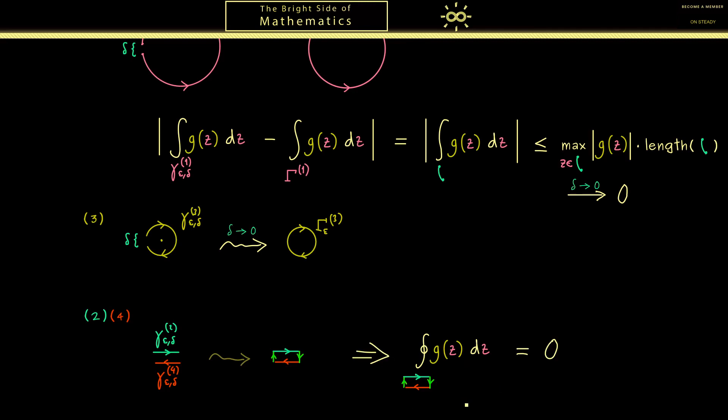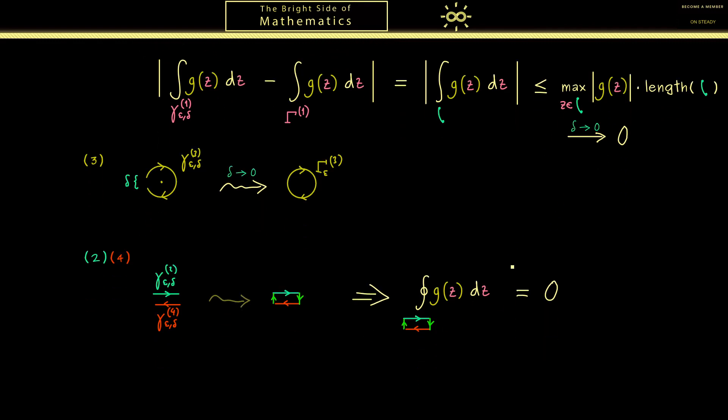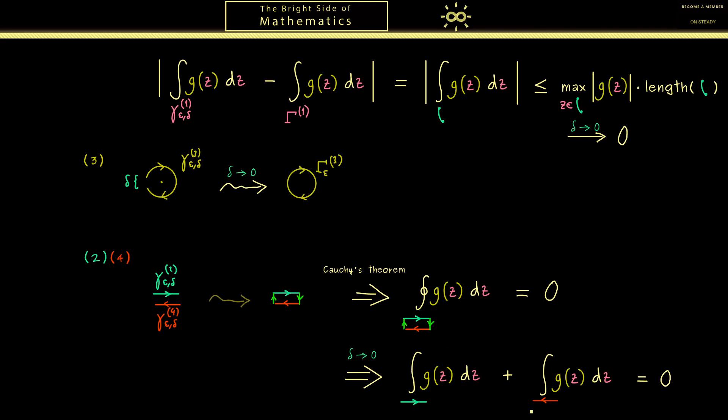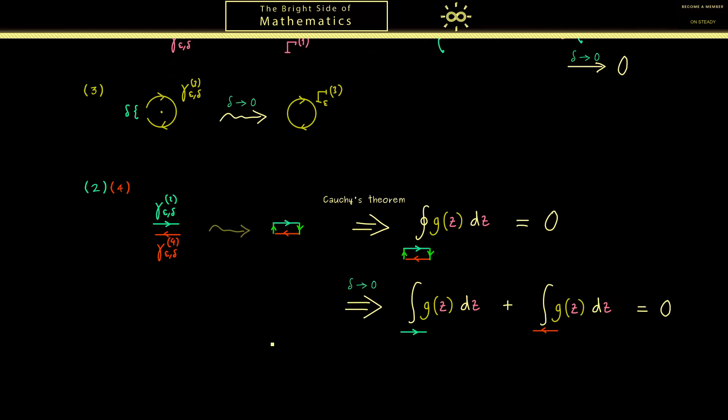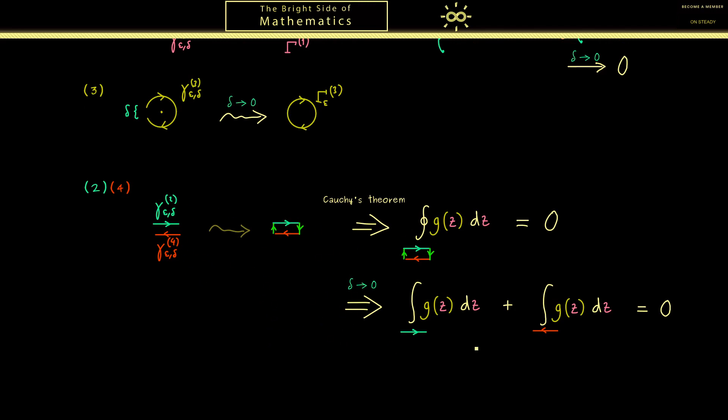And now you also know what one can do. We split it up into four parts again and then we use this estimate from above for the two lines we added. Because they get smaller and smaller when delta goes to 0, the integral along the small lines gets also to 0. Therefore, we can conclude that for delta to 0, only the two integrals along the two lines remain. Moreover, the result is then the sum of both integrals vanishes. We can conclude, in the limit delta to 0, the corridor is not important at all.